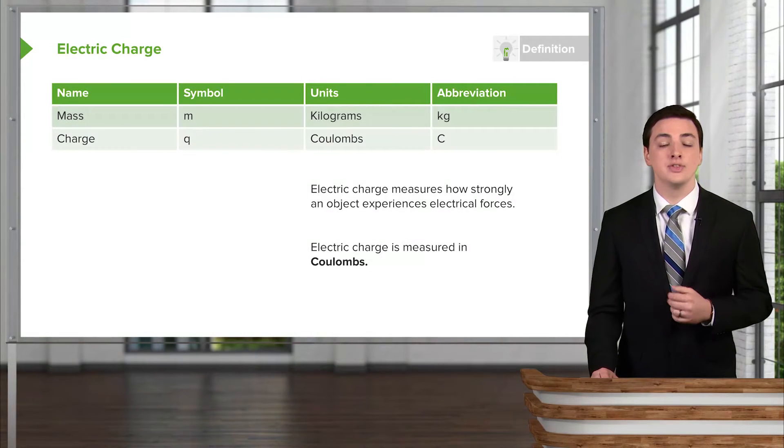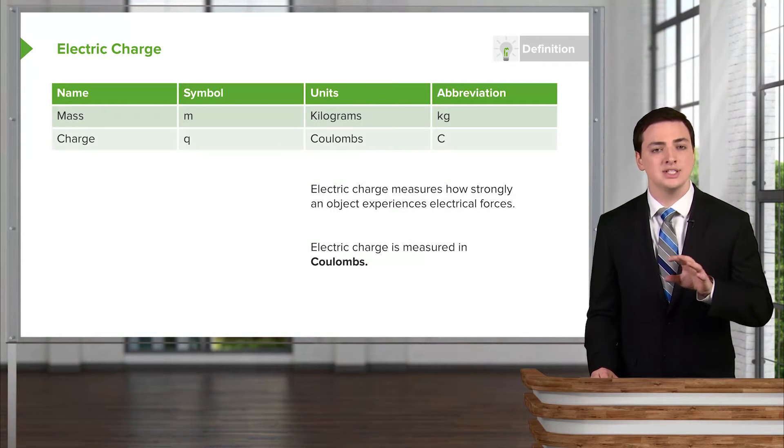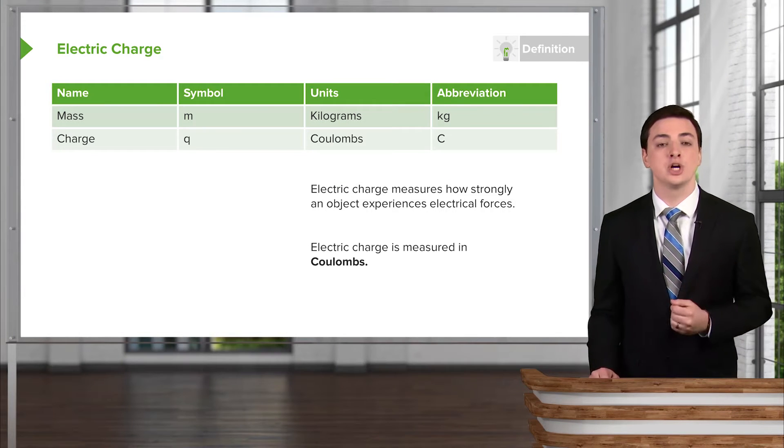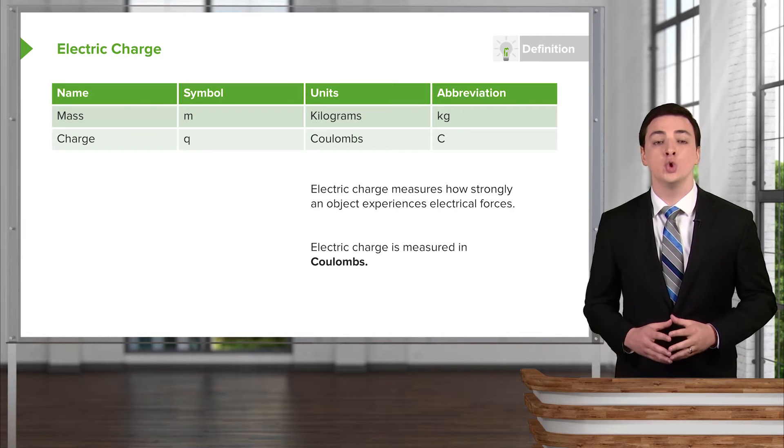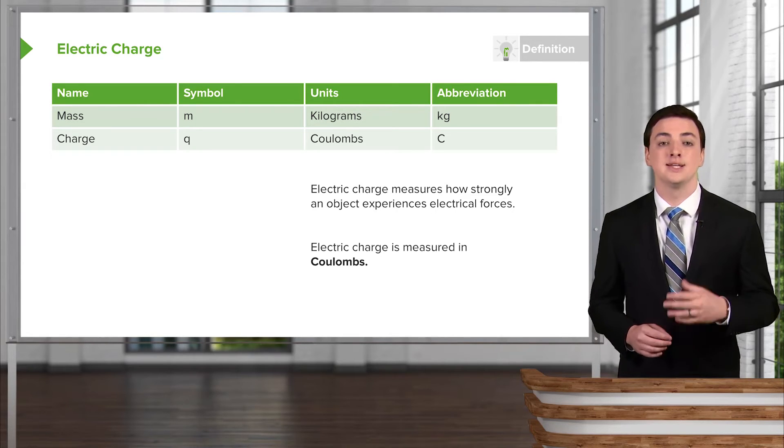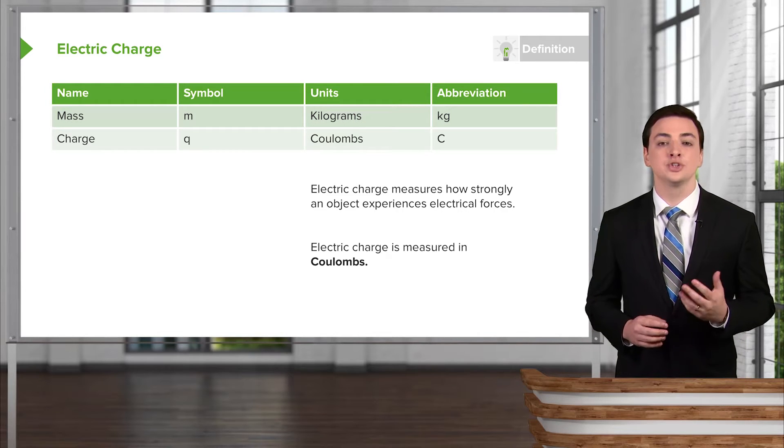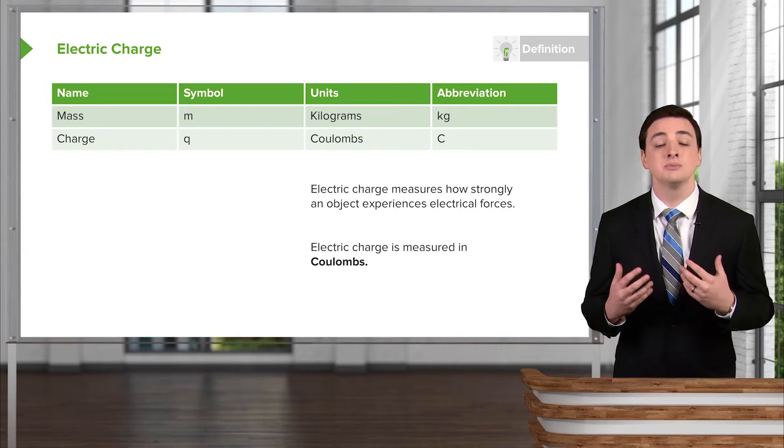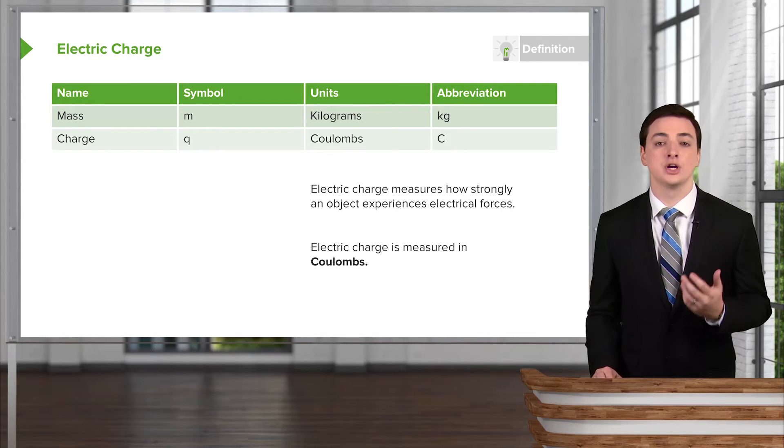We describe this charge in a very similar way which we described mass. We'll see some analogies between these two as we go forward. We describe the charge with a symbol Q, instead of M for mass. We measure in units of coulombs and we use the letter C, a capital letter C, as the abbreviation for the unit of coulombs. This electric charge is basically trying to measure how strongly an object experiences an electrical force when it's in the presence of other charged objects.